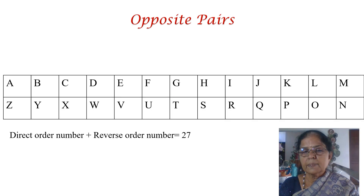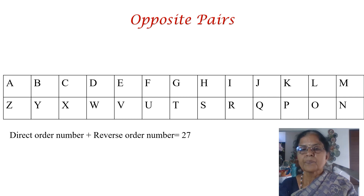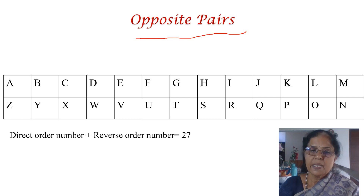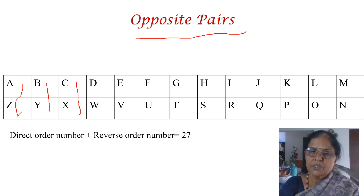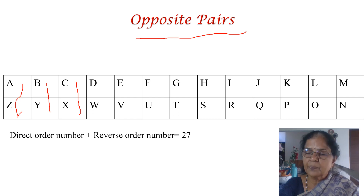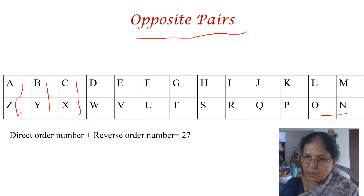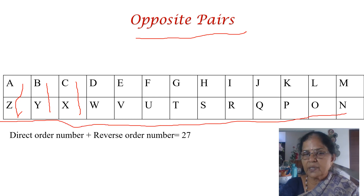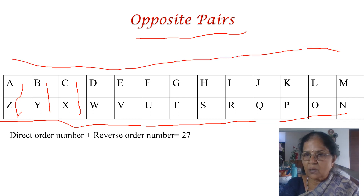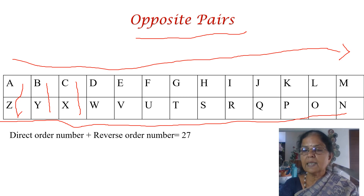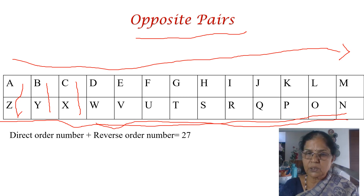Another thing to keep in mind is opposite pairs of alphabets. A and Z are opposite pairs, B and Y are opposite pairs. To find them: write the first 13 letters — A to M — above, and the next 13 letters — N to Z — in reverse order below. Then you will know the opposite pairs: A-Z, B-Y, C-X, D-W, E-V, F-U, G-T, H-S.